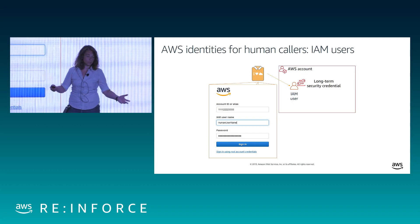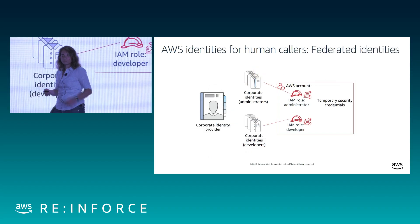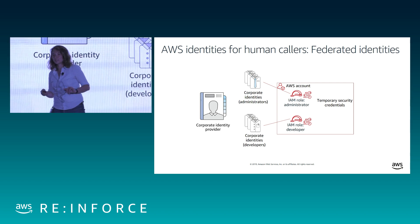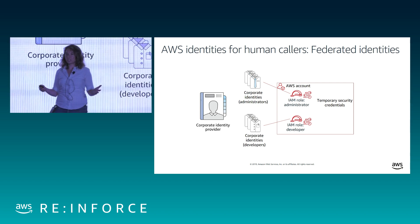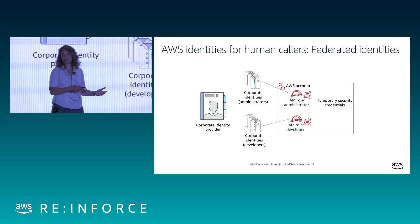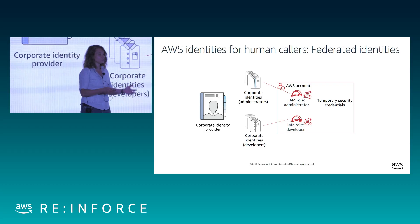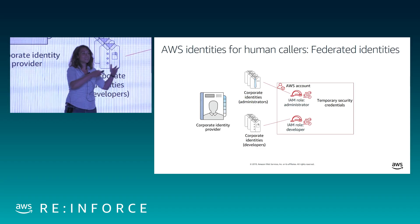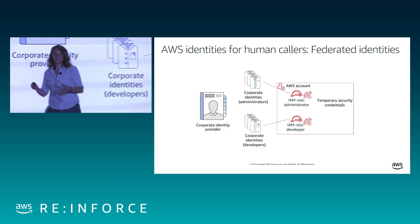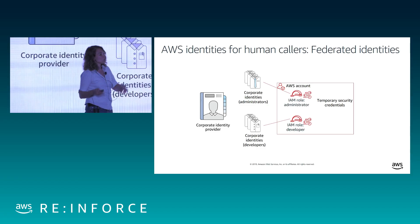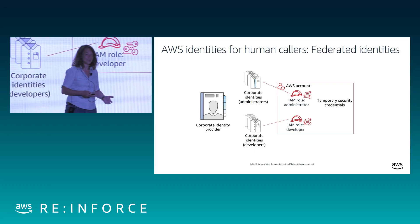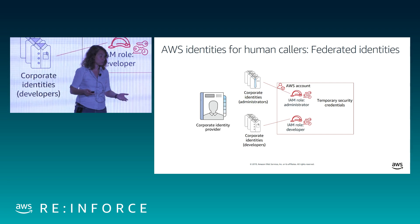An IAM user is a principal — an identity in IAM, somebody who can make calls. Another way human beings can get into AWS — if you're at a large enterprise organization, you might have your own corporate directory like Microsoft Active Directory. You sign into that and then are federated into AWS, landing in not an IAM user but an IAM role. A federated role is another way that a human being could have an identity in AWS from which to make calls.